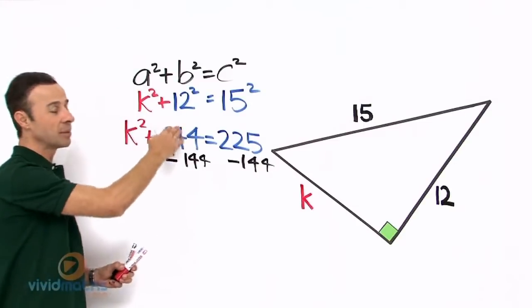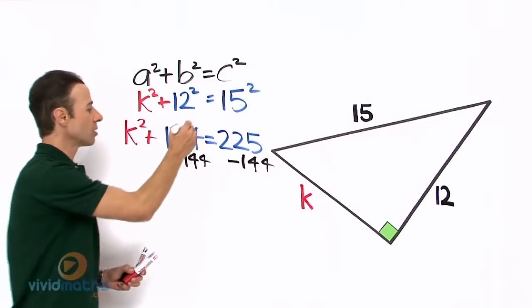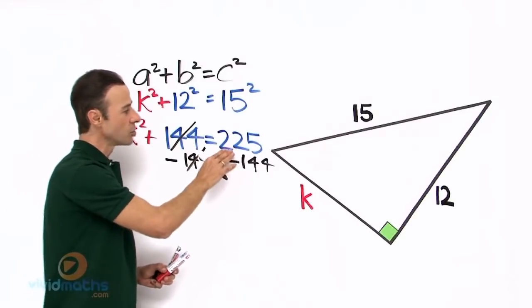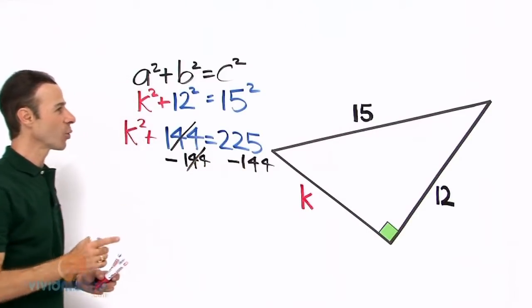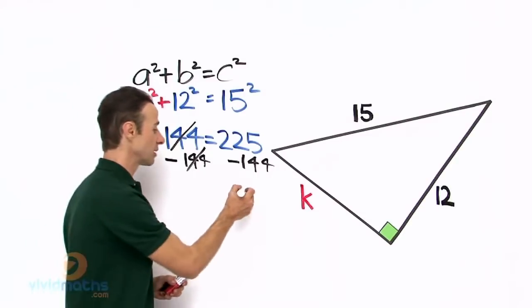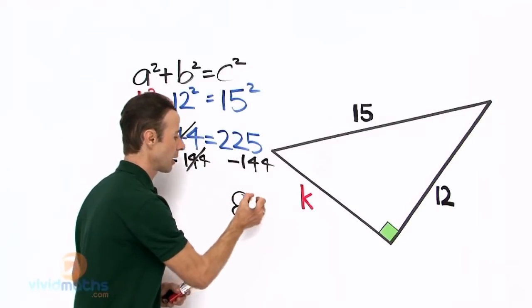So these eliminate - they're gone, I'll cross that out. We're left on the right-hand side with 225 - 144, which on your calculator gives you 81. Let's write that down: 81.